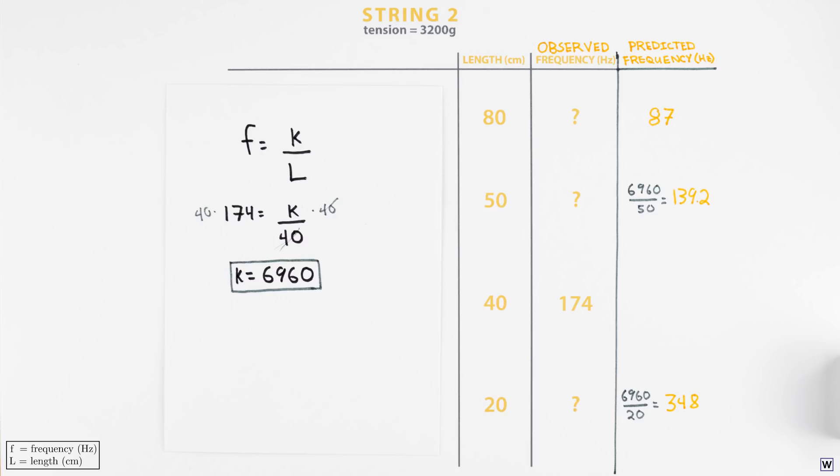Alright, after all that work we finally have a guess at our hidden mathematical connection. Frequency is inversely proportional to length. We also have specific predictions, 87, 139.2 and 348 hertz, computed using our guess. It's finally time to experiment.